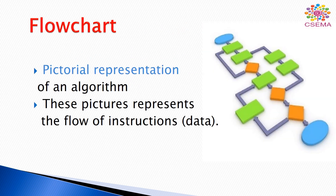Now we are going to learn about flowcharts. A flowchart is basically a pictorial or graphical representation of an algorithm, showing how data or instructions flow from one step to another. We can say that a flowchart is the graphical representation of an algorithm that represents the flow of instructions or data, and it uses some special kinds of symbols.